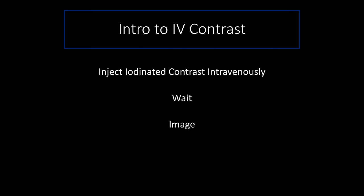So far we've covered basic densities, windowing principles, and the Hounsfield unit scale. The basic takeaway in practice: you're most commonly going to look at a soft tissue window for the mediastinum and a lung window for the lungs.